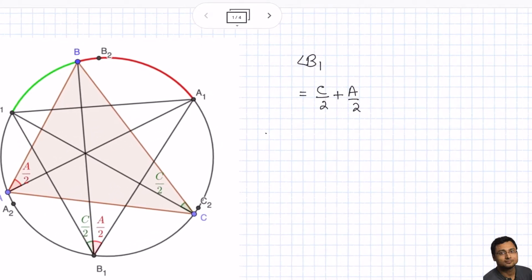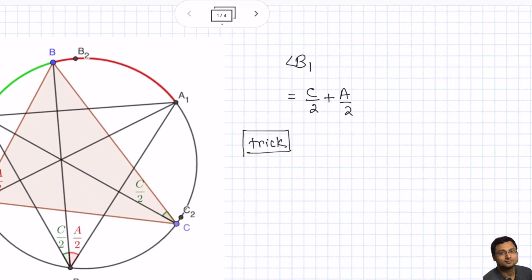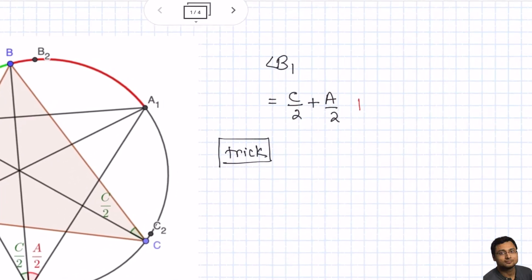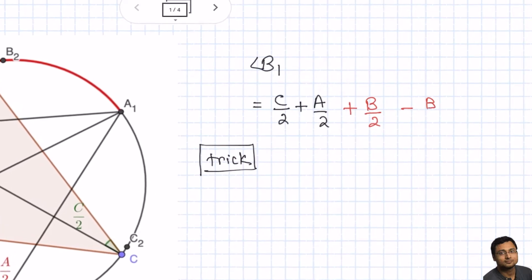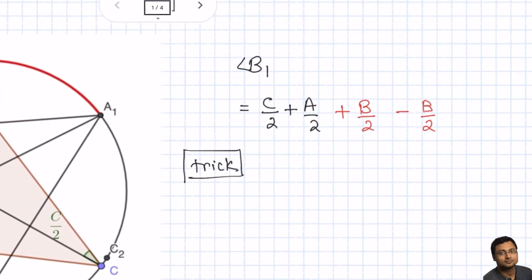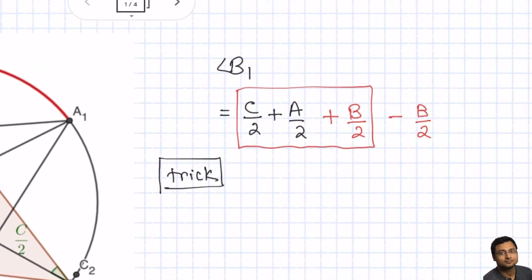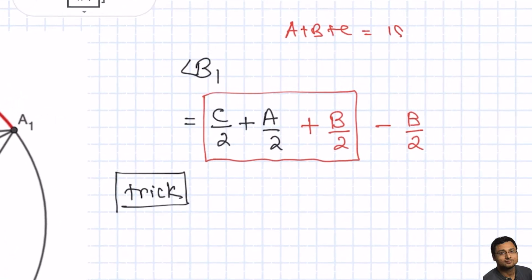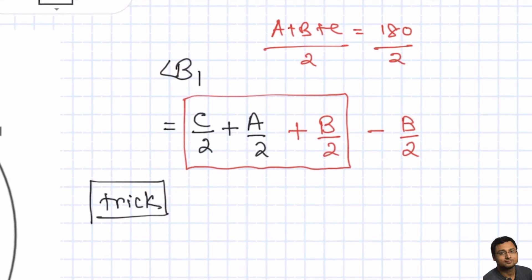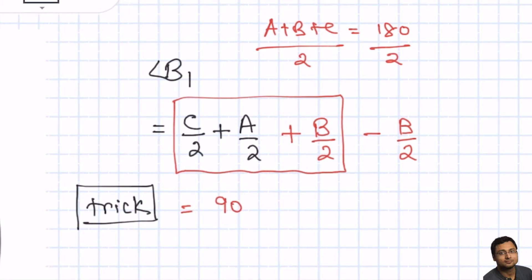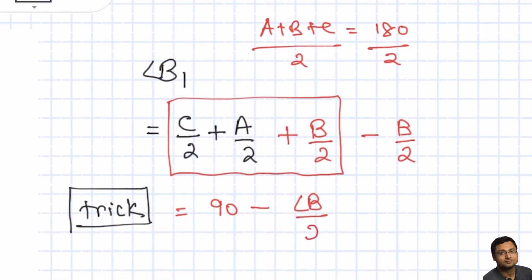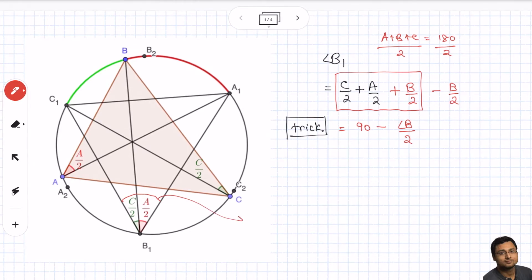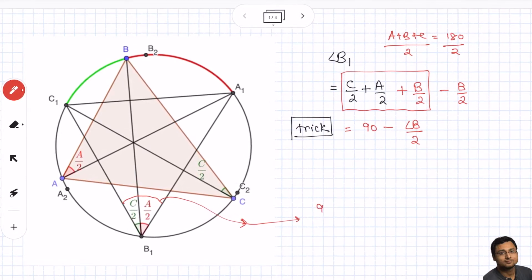Now we will do a trick — a very standard trick in angle manipulation of a triangle. We will be adding B/2 and subtracting B/2. Now notice that since A, B, C are the angles of a triangle, therefore A plus B plus C equals 180, so A plus B plus C divided by 2 is 90. So angle B1 becomes 90 minus B/2. That is the value of this particular angle.